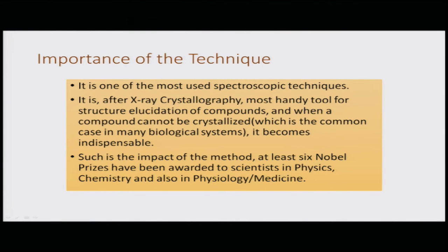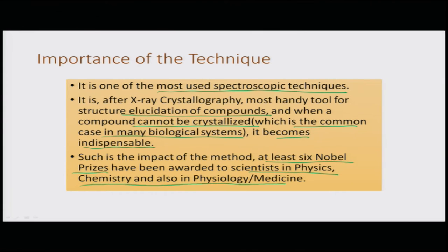NMR is one of the most used spectroscopic techniques. After X-ray crystallography, it is the most handy tool for structure elucidation of compounds, and when a compound cannot be crystallized — common in biological systems — it becomes indispensable. At least six Nobel Prizes have been awarded in physics, chemistry, and physiology/medicine in the field of NMR.